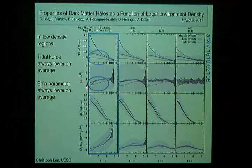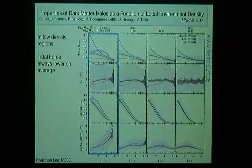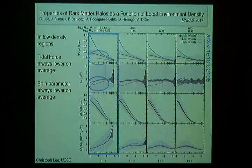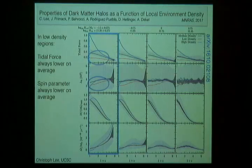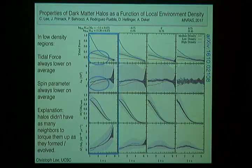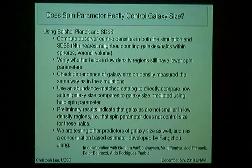This is not the case for halos in high density regions, represented by the blue line. While they have lower spin parameters at redshift zero, this is only something that has developed recently — going back to about redshift one, they're more consistent with median density region halos. The point is that halos in low density regions have always had lower spin parameters and have experienced lower tidal forces throughout their formation and evolution, simply because they didn't have as many neighbors to torque them up.